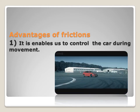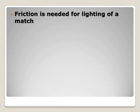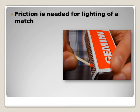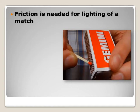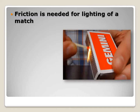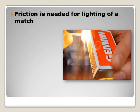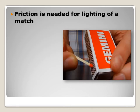Number two: friction is needed for lighting a match. There is a friction force between the head of the match stick and the rough surface on the box of the match. This friction force generates heat and light, which lights the match.